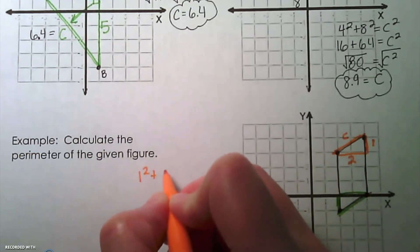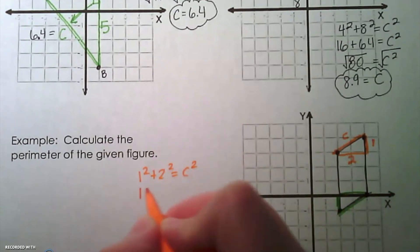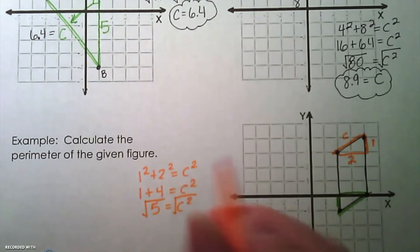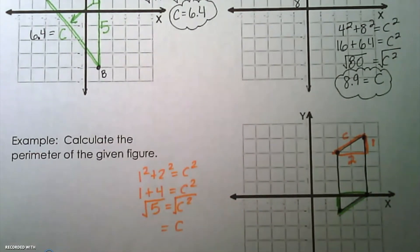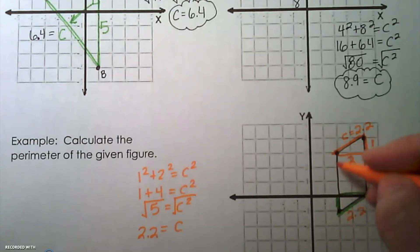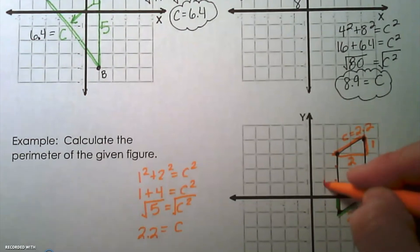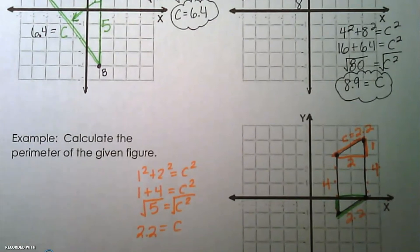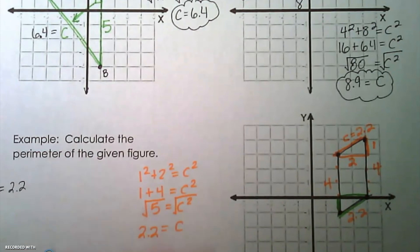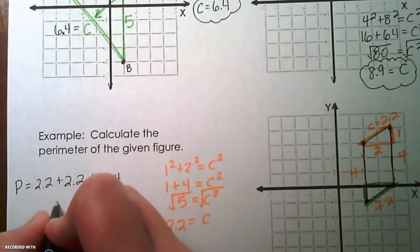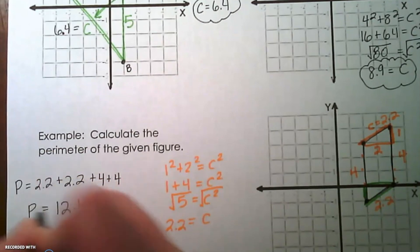We do 1 squared plus 2 squared equals C squared. 1 squared is 1, plus 2 squared is 4, equals C squared. So 5 equals C squared, and taking the square root of 5 gives us 2.2. So each diagonal segment is 2.2, and the two long sides each count to 4. The perimeter equals 2.2 plus 2.2 plus 4 plus 4, which gives us 12.4 as the perimeter of our parallelogram.